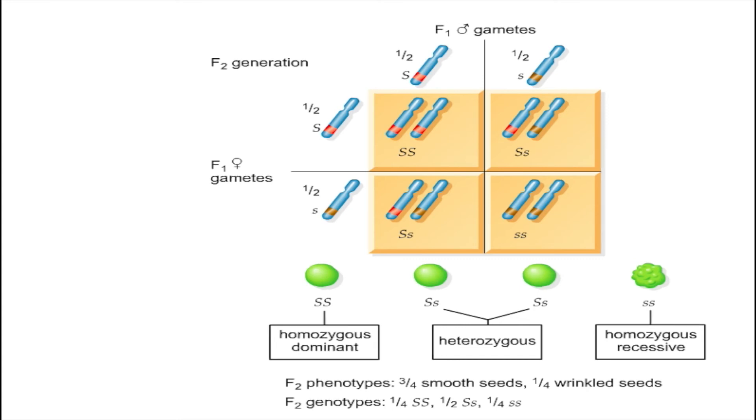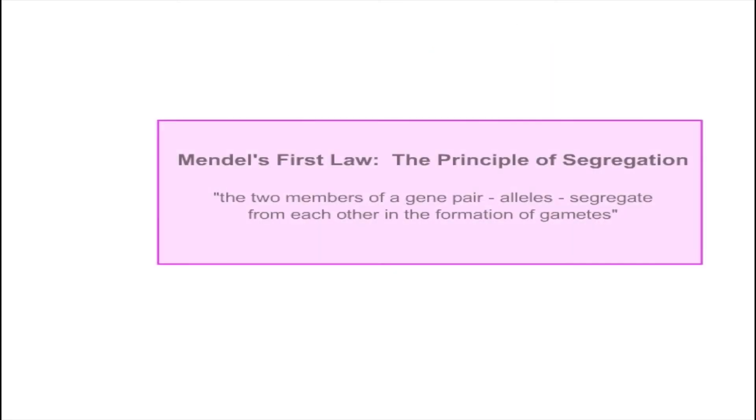The results of Mendel's monohybrid crosses supported his theories, and Mendel proposed his first law, the principle of segregation. The two members of a gene pair, alleles, segregate from each other in the formation of gametes. This means that although big S is dominant over little s in terms of the resulting trait, both types of factors are equally represented in the gametes.